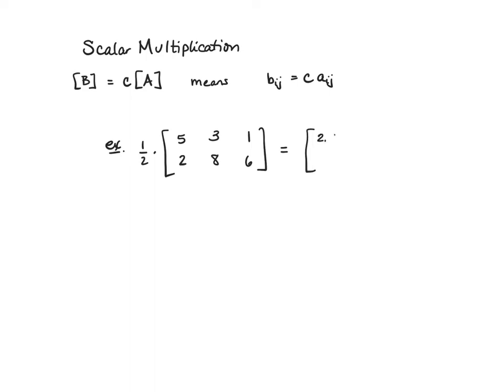And so I'm going to have two and a half, one, one and a half, four, one half, three would be my answer. So I just do it term by term. So scalar multiplication, very simple.